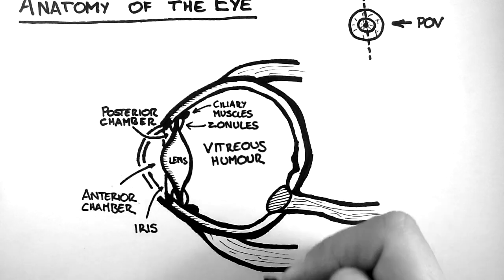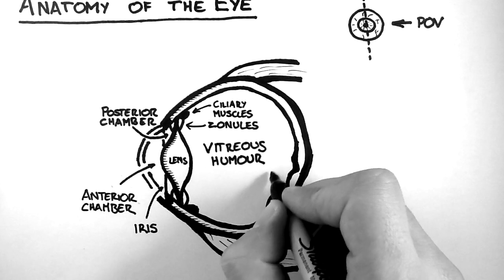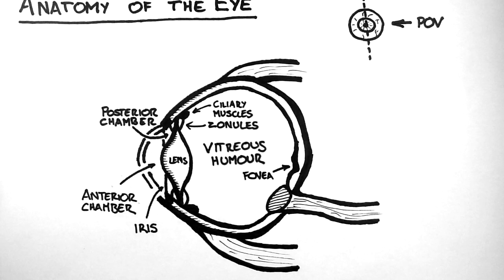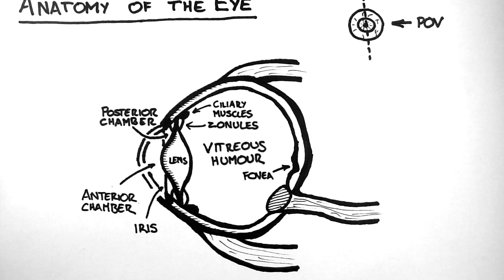At the back of the eye, we have a small pit called the fovea, which is an area with a high density of colour photoreceptors called cones. This is the part of the retina used for high acuity vision.